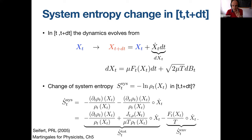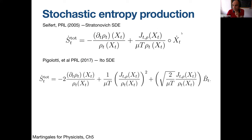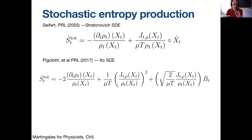Doing this change from t to t+dt gives an equation with two terms: one is force times velocity, which is the heat dissipated to the environment (environmental entropy), and the rest is the entropy production term. This was introduced in the classic paper by Seifert, but all those calculations were done in the Stratonovich convention. If you rewrite this equation in Itô, 12 years later we showed this becomes a specific SDE in Itô form.